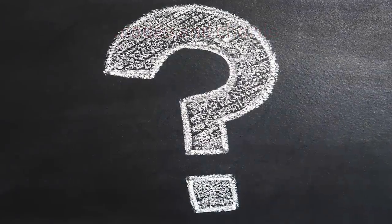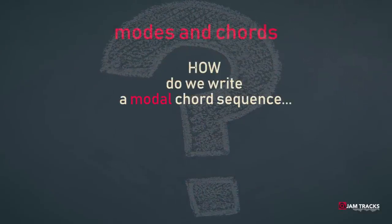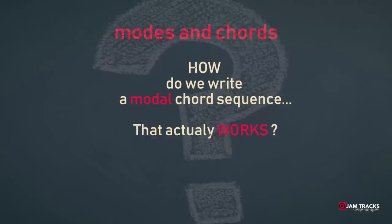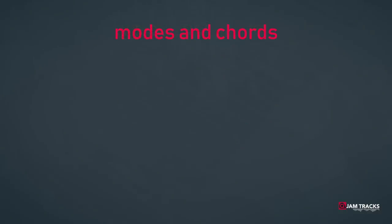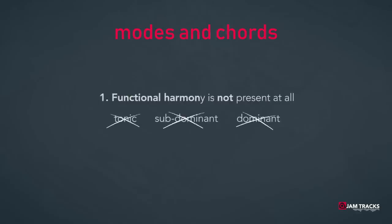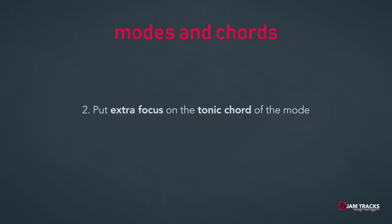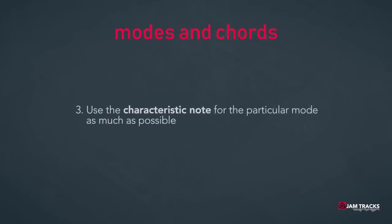So, now the big question: how do we write a modal chord sequence that actually works? There are a couple of things we need to keep in mind when composing modal harmony. First of all, functional harmony is not present at all. Second, we should put extra focus on the tonic chord of the mode to convince the listener that we are in a mode and not in a major or minor key — for instance, by repeating it a lot. Those repeating chord patterns are called an ostinato. Then we should use characteristic notes for the particular mode as much as possible, since these notes trigger our ears to believe that we are in a mode.